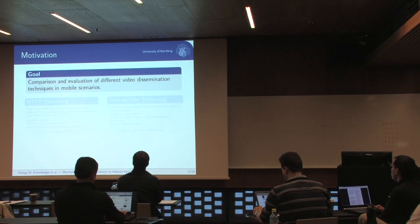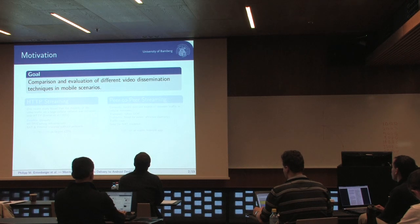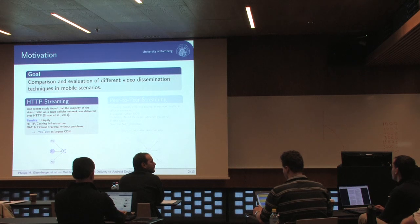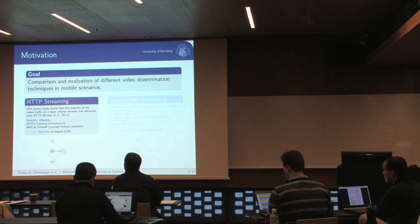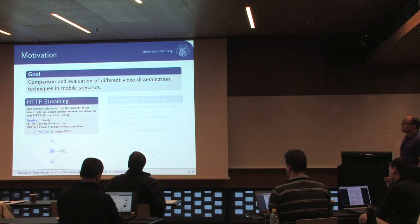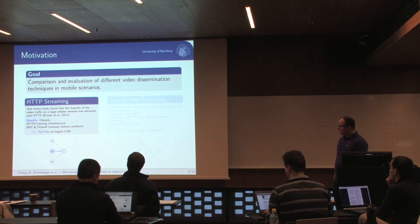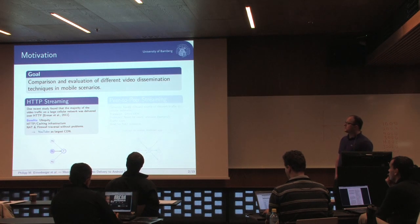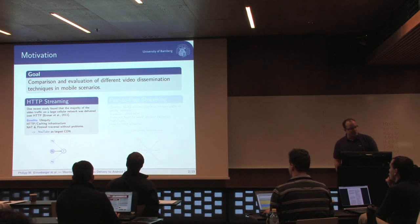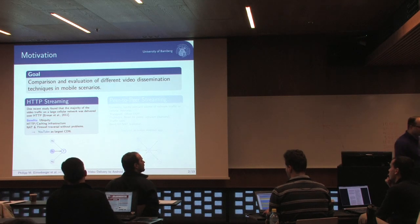Our goal was to compare and evaluate different video dissemination techniques in mobile scenarios. Of course, we took HTTP streaming due to its ubiquity. Its benefits are quite clear — it can use HTTP and its caching infrastructure, and it has very easy NAT and firewall traversal. Therefore, we took YouTube as the largest CDN probably worldwide.